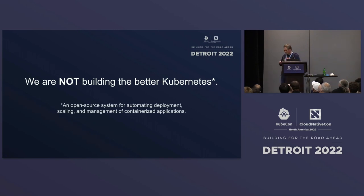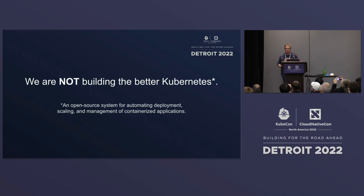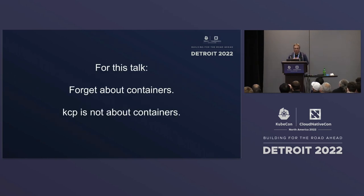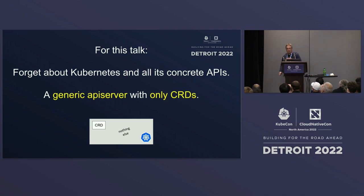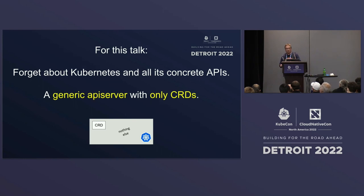We are not building the better Kubernetes. Kubernetes is a production-grade container orchestrator. KCP, as a core project, has nothing to do with containers or orchestration of containers. It uses the technology of Kubernetes but we try to generalize it. Forget about containers for the next hour — it's not about containers. What you get are workspaces. There are CRDs and a couple of generic things like config maps, secrets, resource quota, but nothing about workloads. It's a generic API server, and it has CRDs.